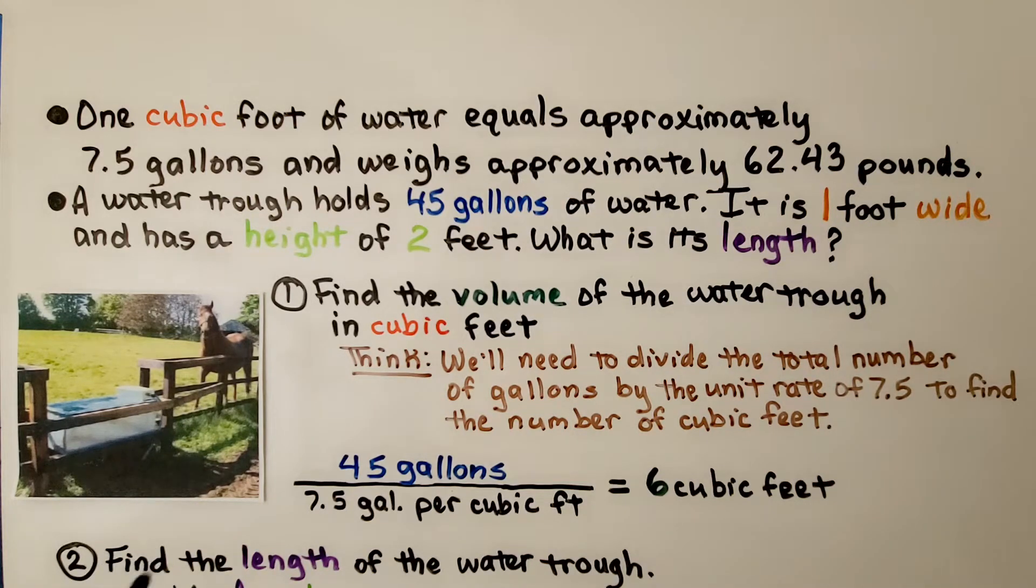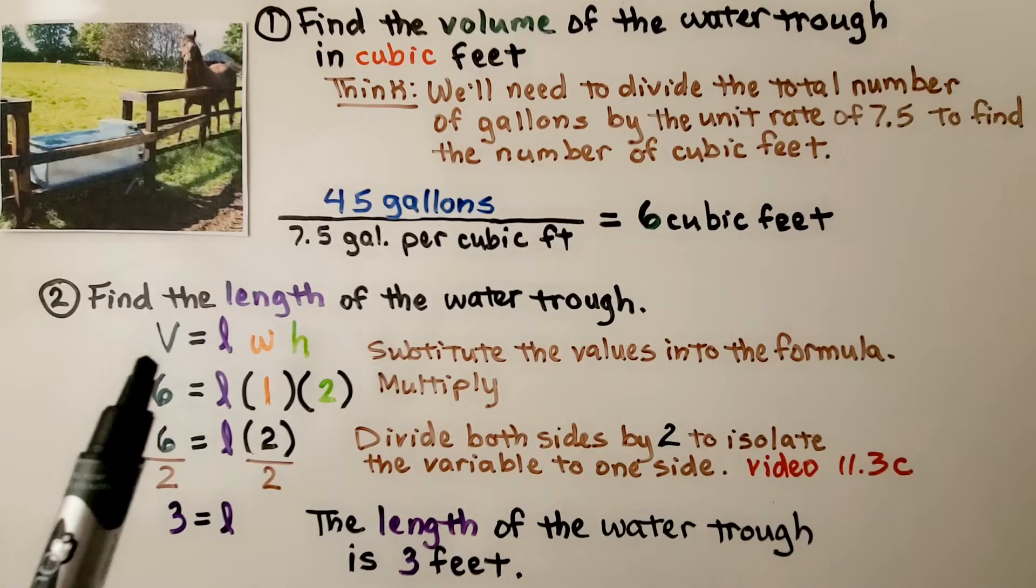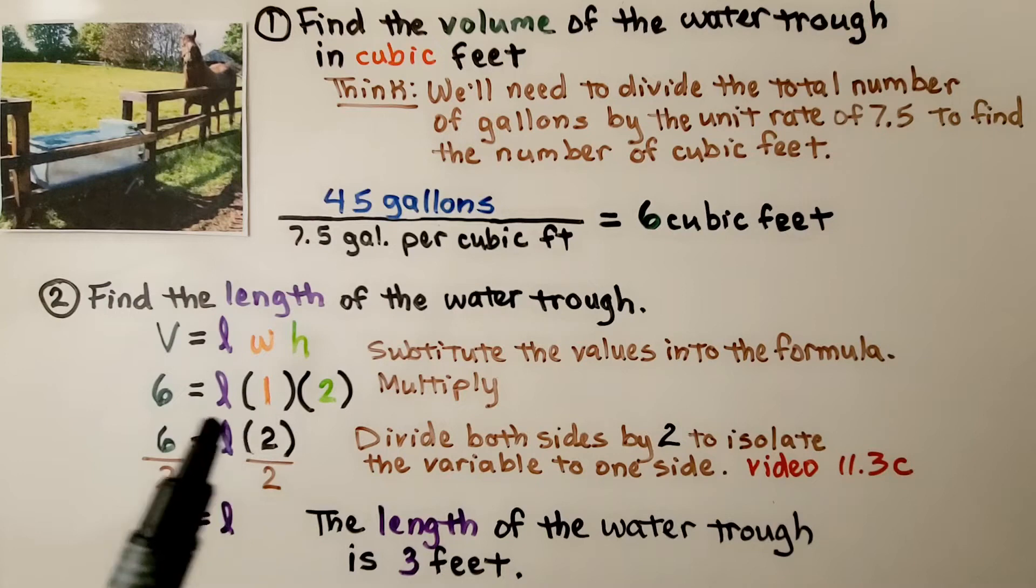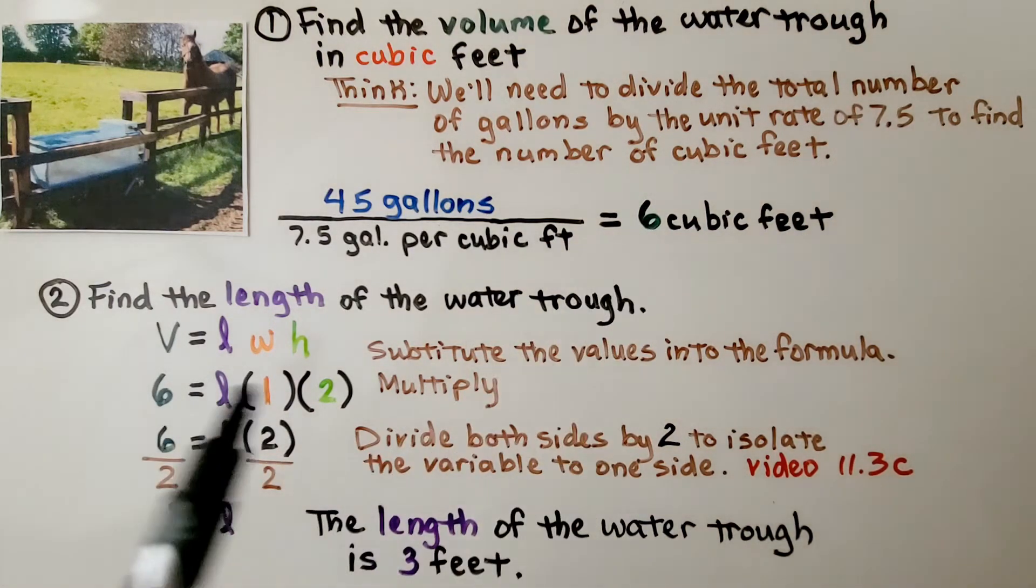Now, we need to find the length of the water trough. This 6 cubic feet is our volume. We use the formula for volume. Volume is equal to length times width times height. We substitute in the values that we do know. We know it's 6 cubic feet. That's our volume.